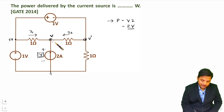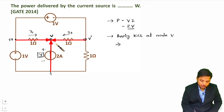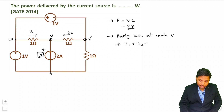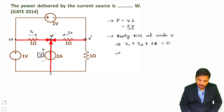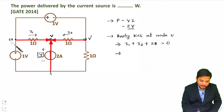Let us apply KCL at node V. Currents I1, I2, and the 2 ampere source current are all entering the node, so I1 plus I2 plus 2 equals 0. Now I1 equals (tail voltage minus head voltage) divided by resistance, where tail voltage is 1 volt and head voltage is V, so I1 equals (1 minus V) divided by 1.